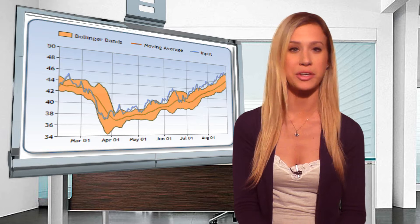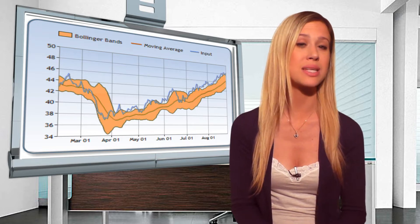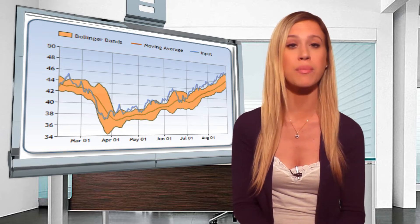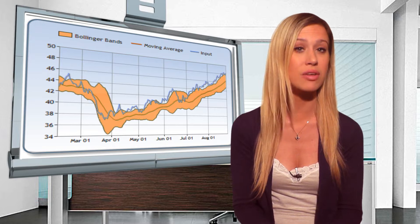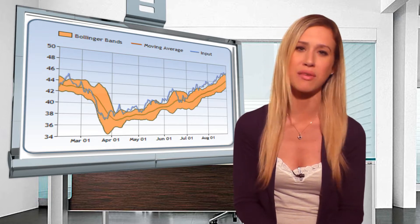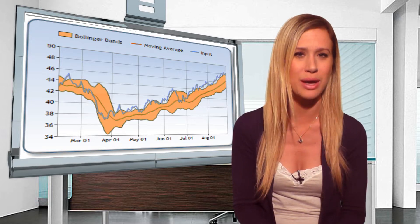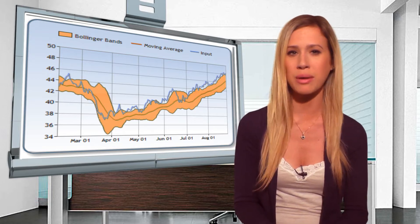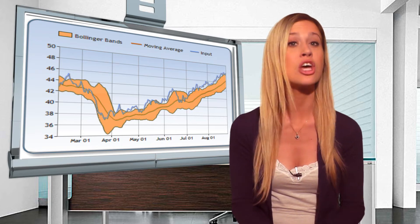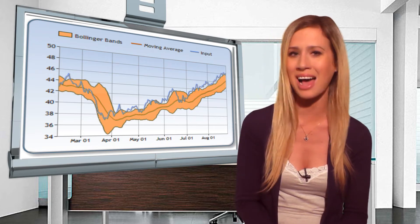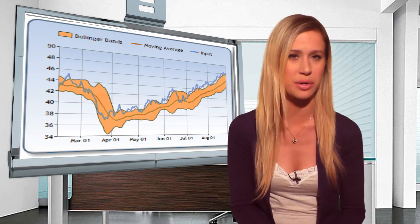Welcome to Investors Trading Academy's Term of the Day. Today we are going to talk about Bollinger Bands. Bollinger Bands are used as an indicator to compare both volatility and relative price levels over a specific time period. The indicator is made up of three bands that are specifically designed to cover the majority of the price action of a security.